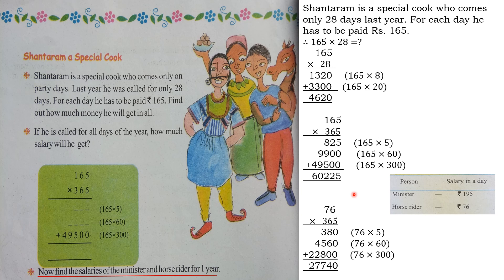For 76 × 365, split 365 into 300 + 60 + 5: 76 × 5 = 380, 76 × 60 = 4560, and 76 × 300 = 22800. Adding all three gives rupees 27,740 — that is the annual salary of the horse rider. You have to calculate the minister's salary yourself by multiplying 195 × 365. I hope you understand this method of multiplication.